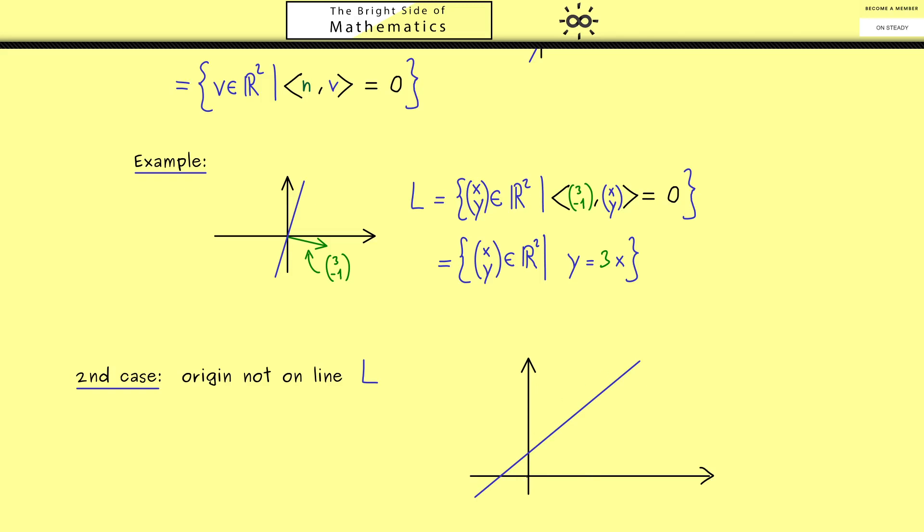And now you could say this line is translated from the origin to this point here. Then this translation is given by a vector p. This shouldn't be a problem for us because we know the vector addition.